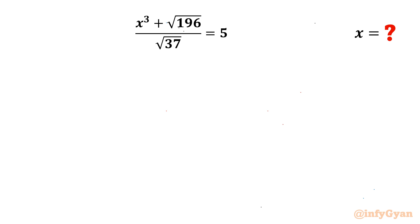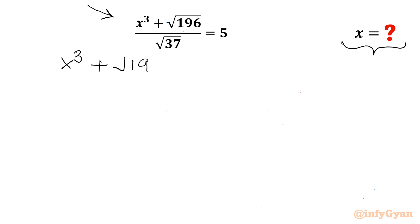Welcome back to Infigyan, my dear friends. In today's video we have one very interesting question from algebra. We have to evaluate the real value of x. The given equation is x³ + √196/√37 = 5. Let's get started by considering cross multiplication, so we can write x³ + √196 = 5√37.